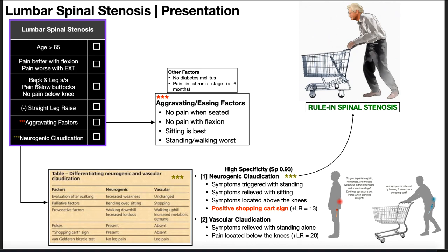What is their pain? They're going to have back pain — it's lumbar stenosis. That back pain becomes worse with extension and better with flexion. There may also be buttock and leg symptoms — pain in the buttocks or below the buttocks — but generally with lumbar spinal stenosis, there is no pain below the knee.